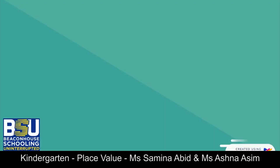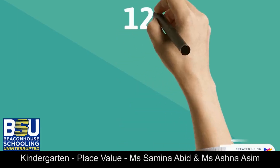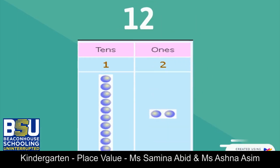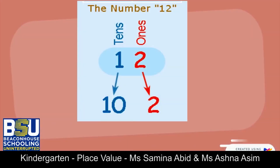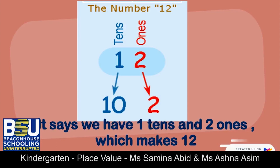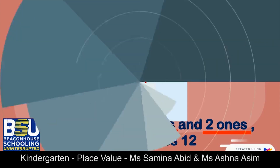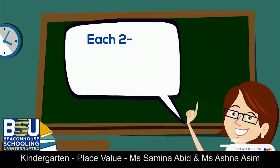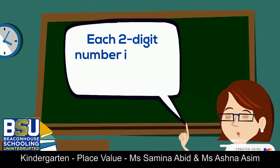Let's take an example of the number 12. The digit two is in the place of ones, and the digit one is in the place of tens. That means we have one ten and two ones, which makes 12. Each two-digit number is made up of tens and ones.